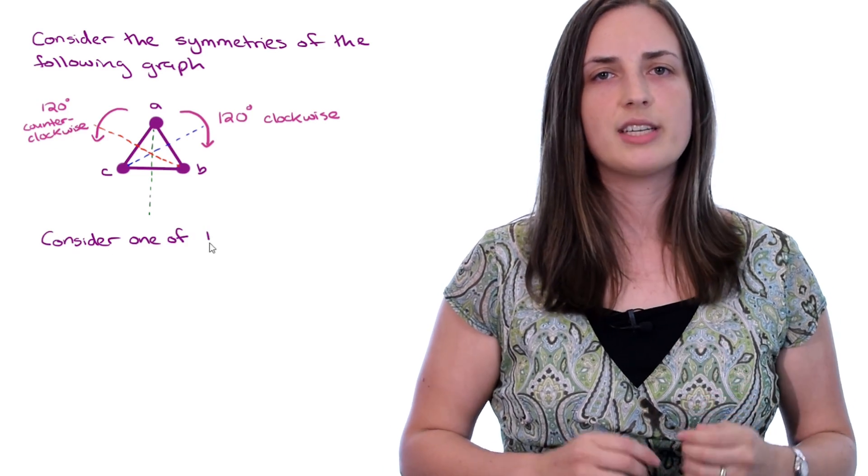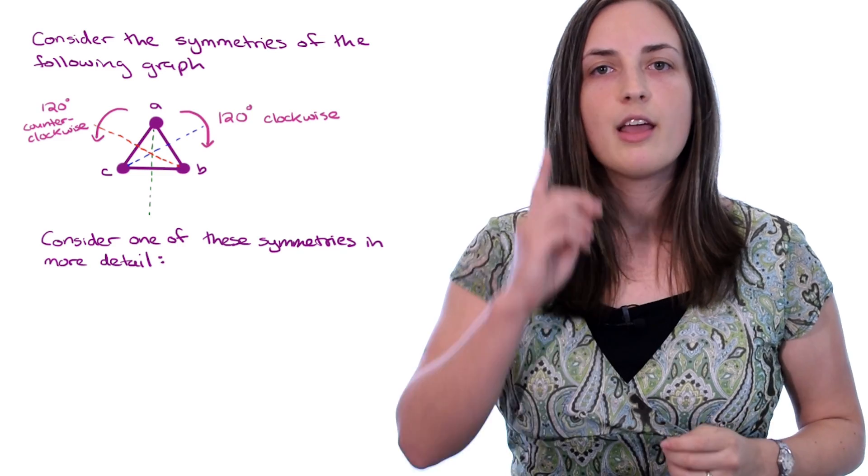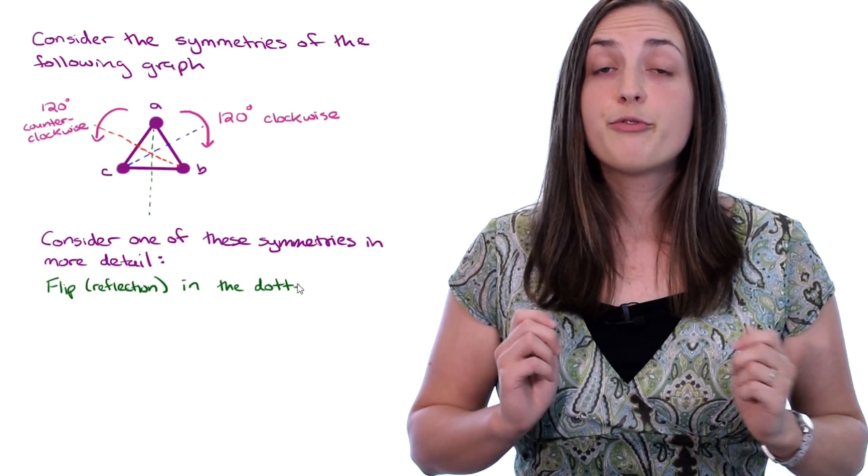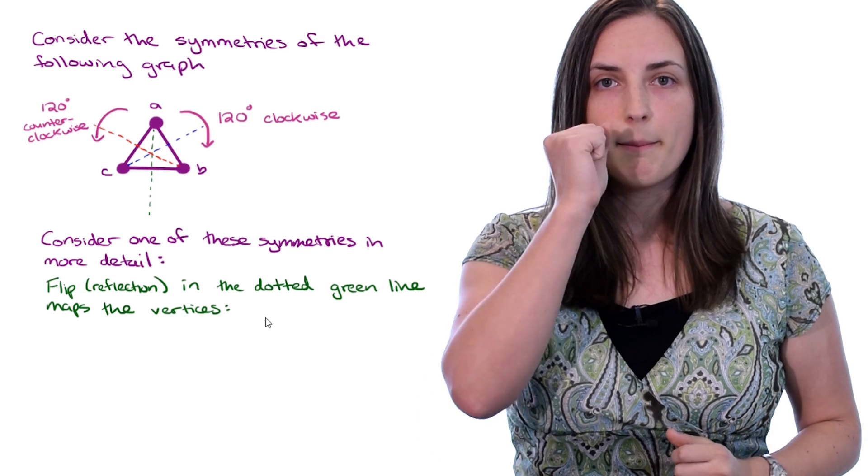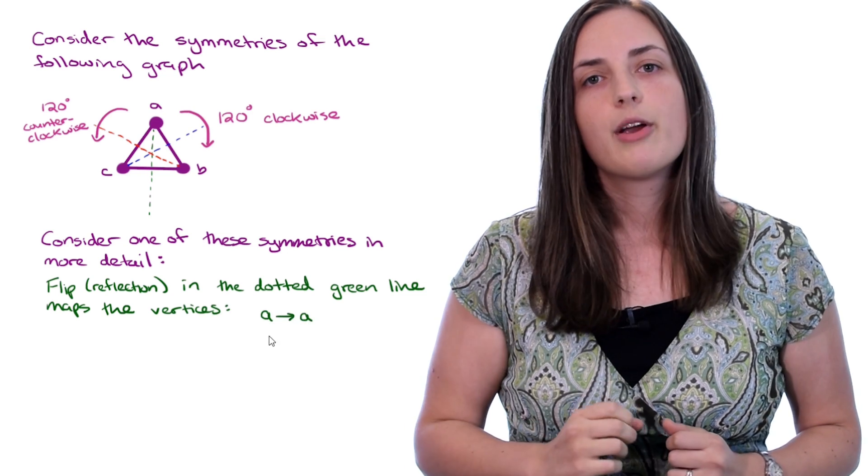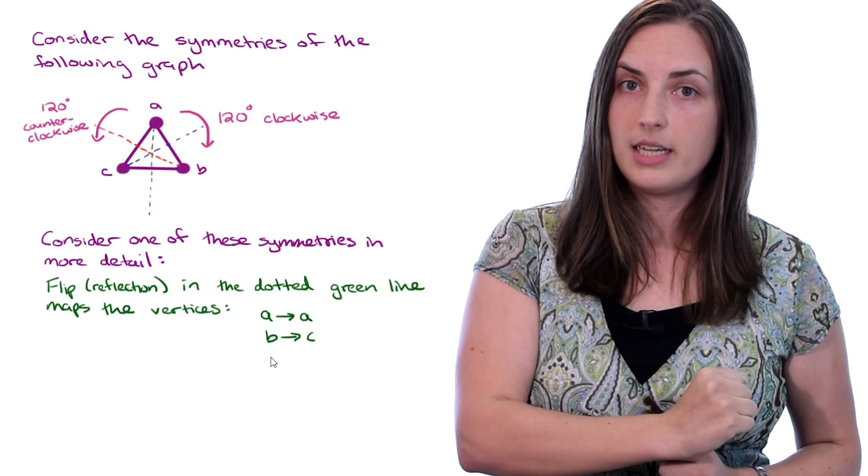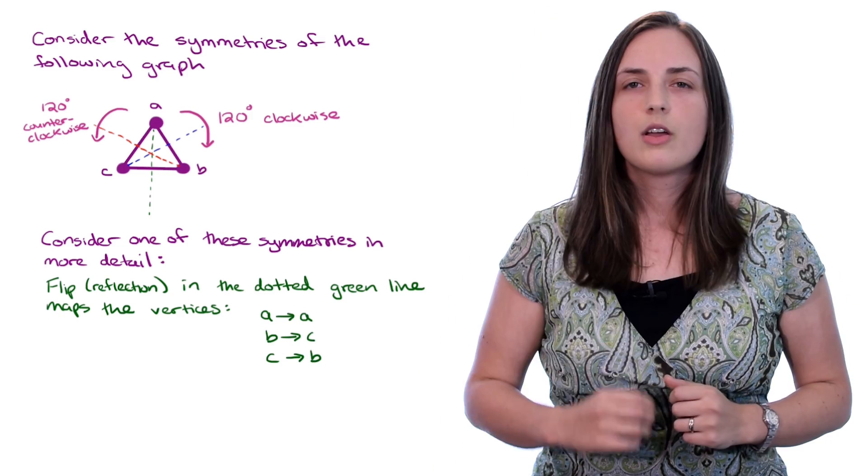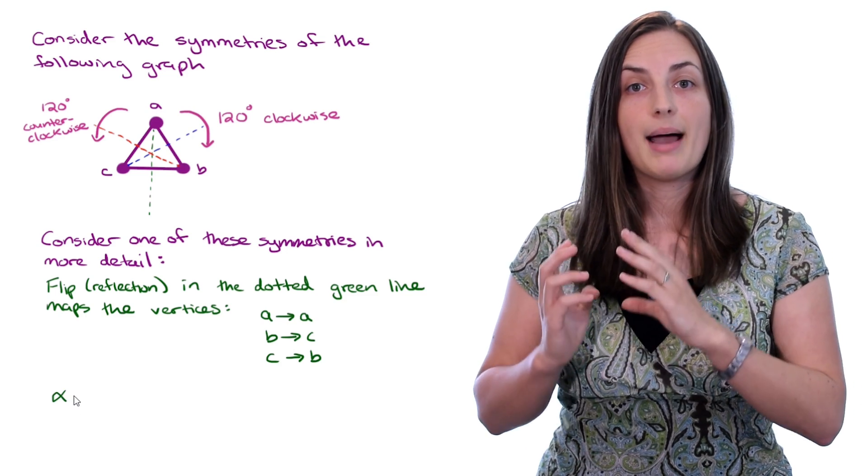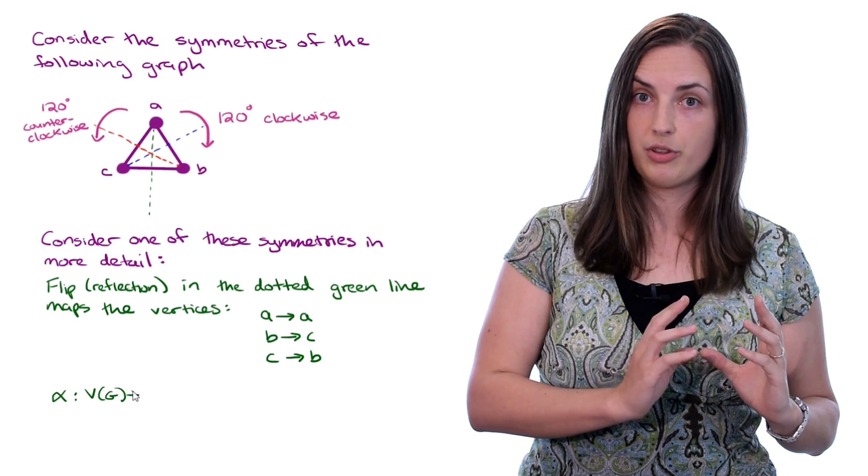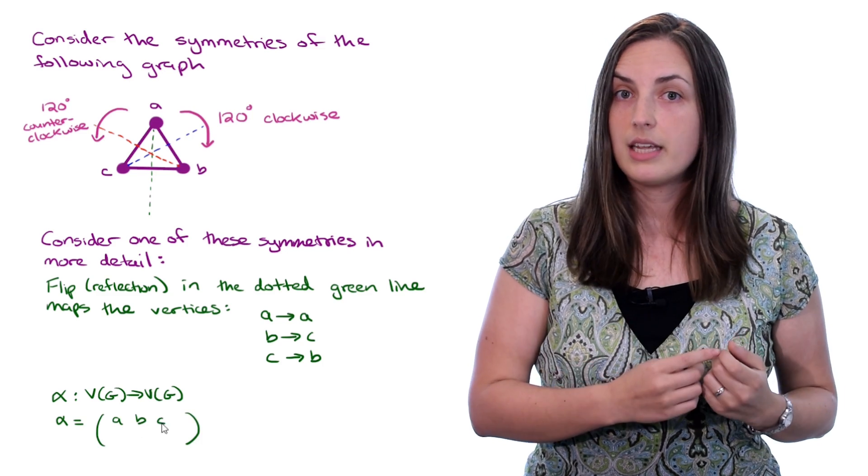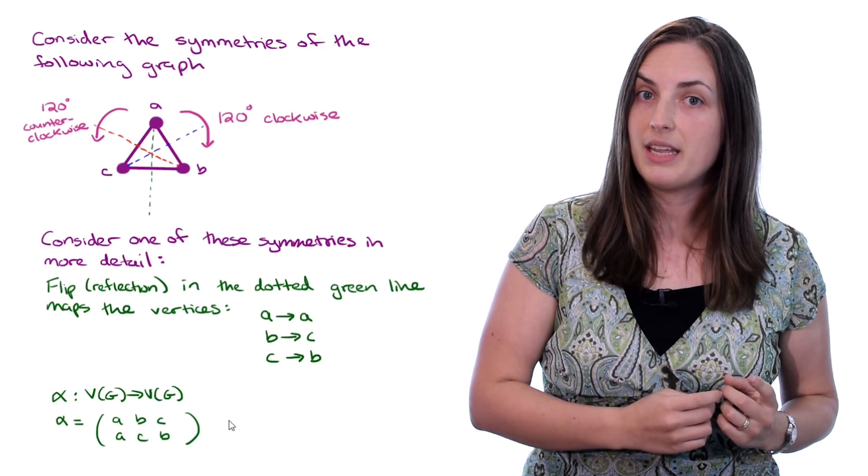Now let's consider one of these symmetries in more detail. Let's pick the green symmetry line. If we look closely, when we flip over the green symmetry line, we are mapping the vertex A to itself, to A. And we're mapping the vertex B to C, and we're mapping the vertex C to B. So we can call this permutation map alpha, a map from the vertex set of G to the vertex set of G, which does the following. It maps A, B, and C to A, C, and B respectively.